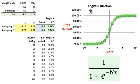The logistic function is popular for transforming a credit score into a probability of default.